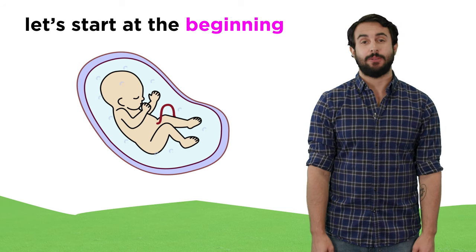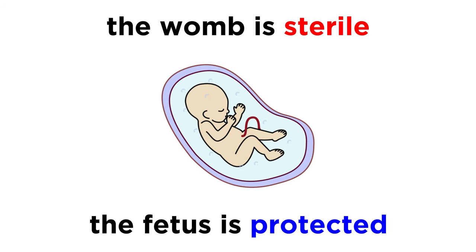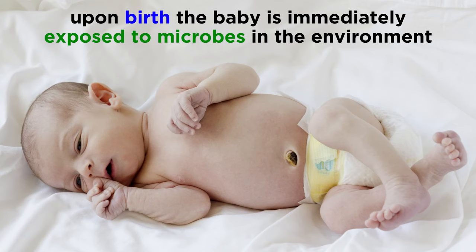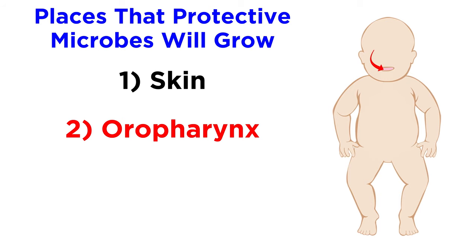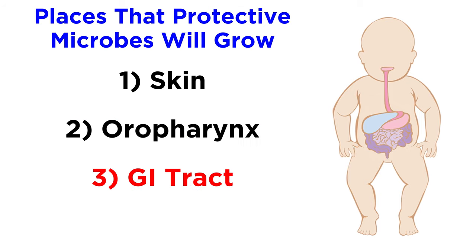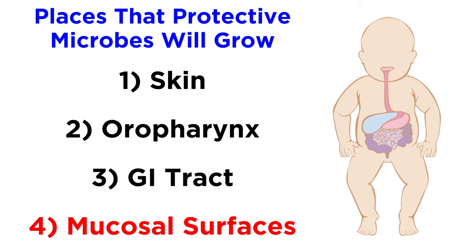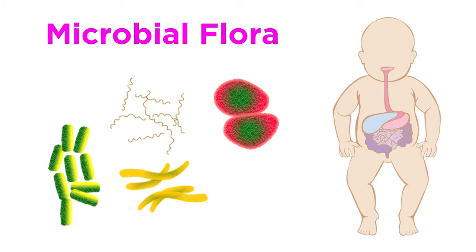Let's start from conception. As a human fetus develops, it's protected within the sterile womb of its mother. As soon as it's born, an infant is immediately exposed to microbes from both its mother and the surrounding environment. Protective microbes begin to grow first on the infant's skin, then their oropharynx — the back of the throat. The gastrointestinal tract is colonized next, followed by other mucosal surfaces. These populations of bacteria are called microbial flora.